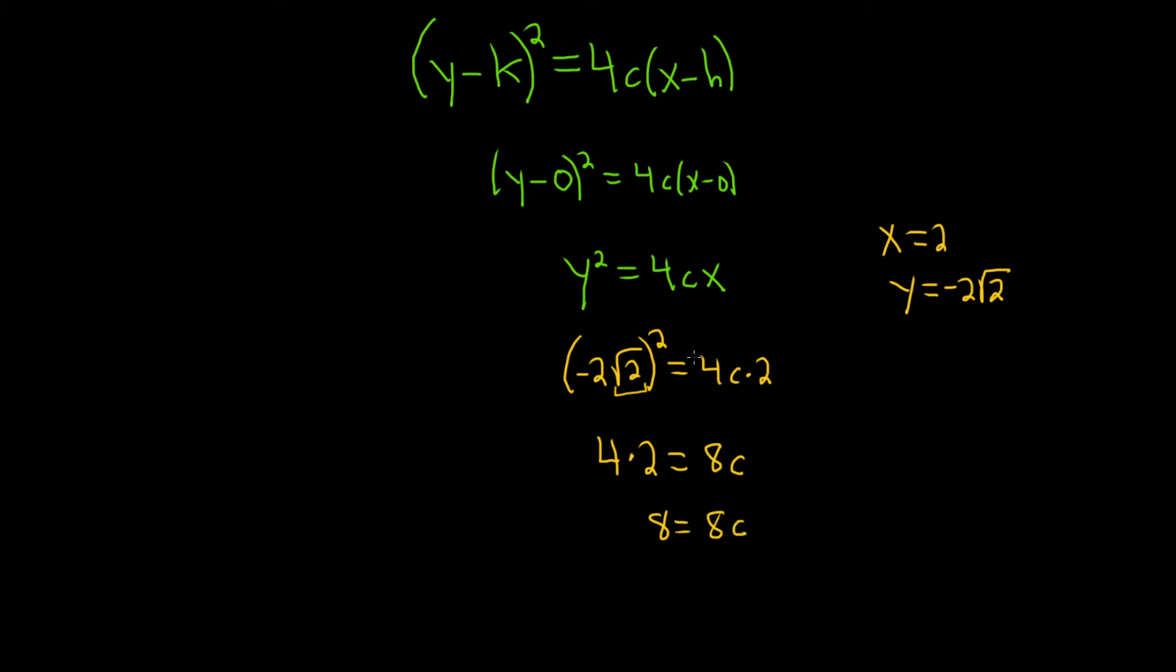Since it's being multiplied by 8, to get rid of it, we divide by 8. We divide both sides by 8, and so we end up with c = 1.